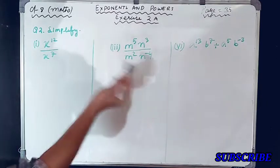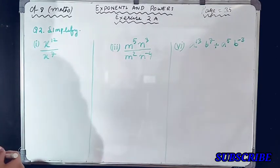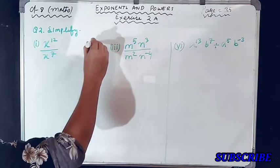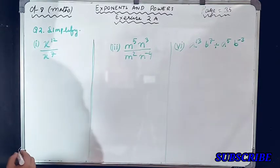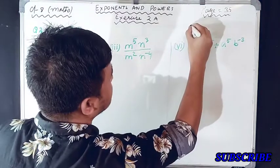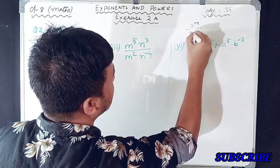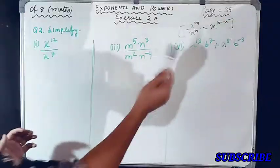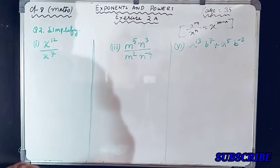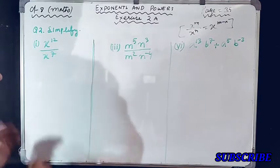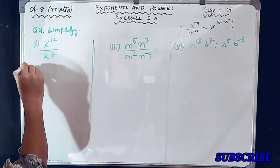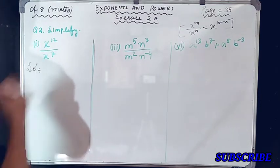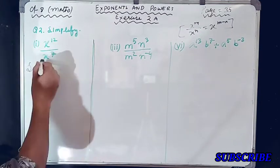We have to bring the question in simple form. In question number two, we have to use Law number two. Law number two states: x raised to the power m, divided by x raised to the power n, is equal to x raised to the power m minus n. Beside this law, we have to use some other laws also, but in every question we will be using this law.